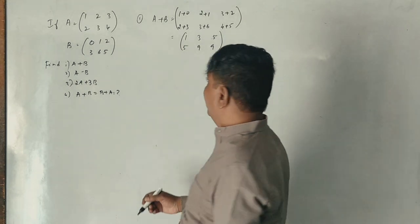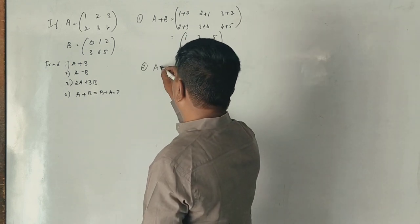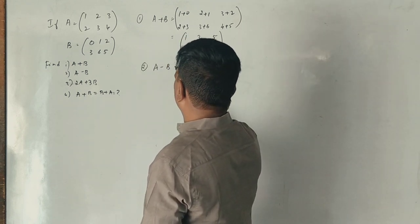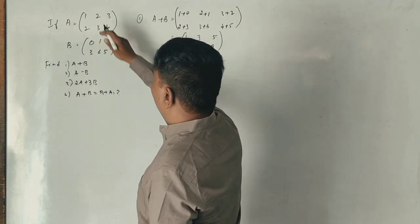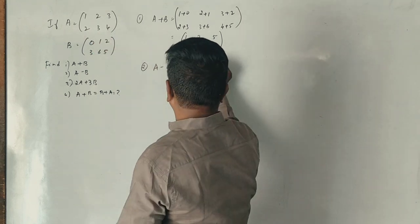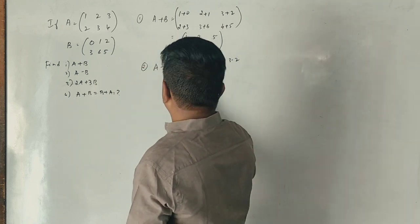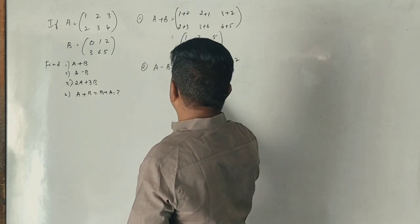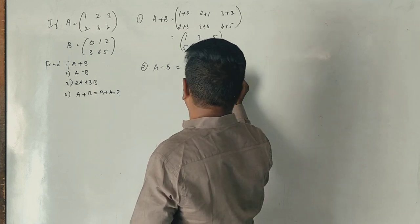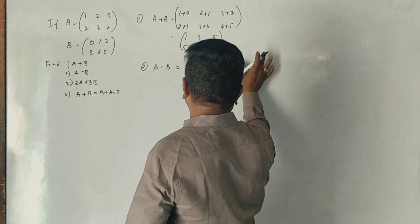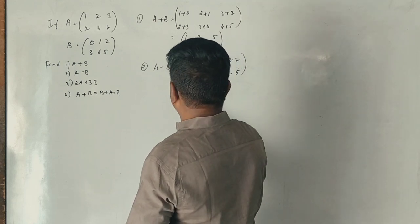Now A minus B: 2 minus 1, 3 minus 2, 2 minus 3, 3 minus 6, 4 minus 5, 4 minus 5. So A minus B answer is complete.